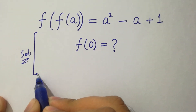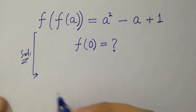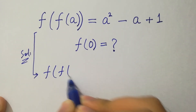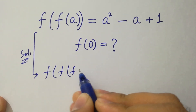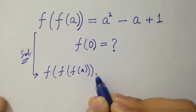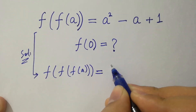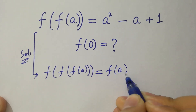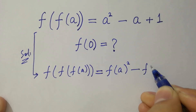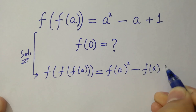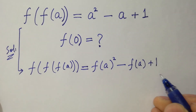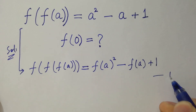To solve this problem, we have that f of f of f of a equals f of a squared minus f of a plus 1. This is the first equation.